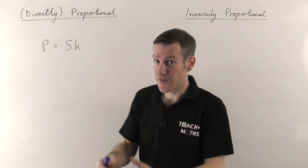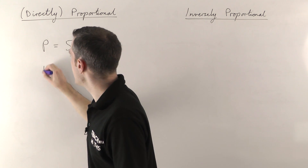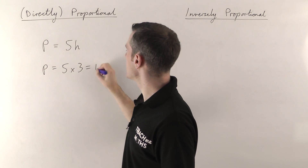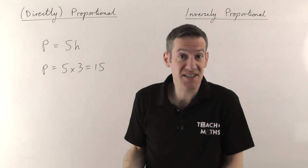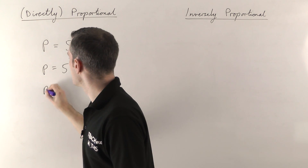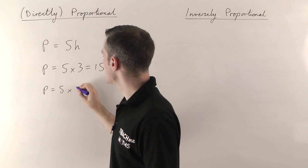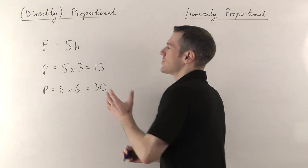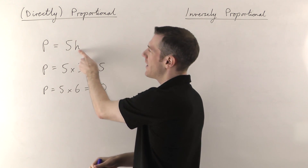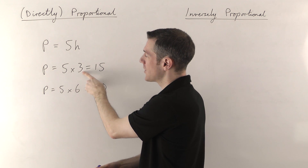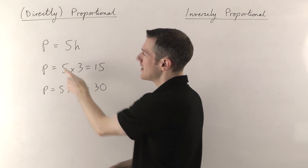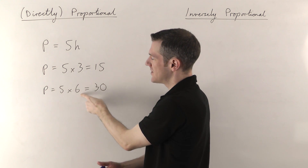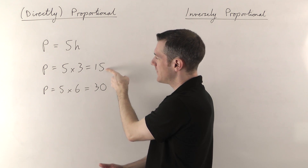As an example, imagine you worked for three hours — your pay P is going to be five times three, which is fifteen pounds. But if instead you worked for six hours, your pay is five pounds times six hours, which is thirty pounds. So if the number of hours you work doubles — from three hours to six hours — then the pay you get doubles as well, from fifteen to thirty.